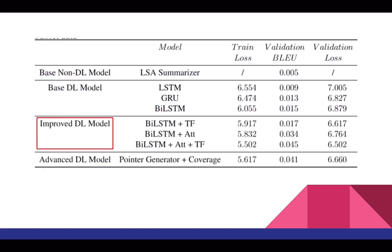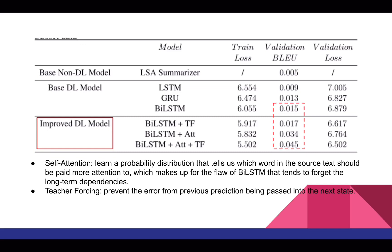In the improvement part, we can see that both teacher forcing and self-attention have managed to improve the model performance, and together they can dramatically boost the BLEU score to 0.045. We think this improvement should be credited to the advantage of self-attention and teacher forcing, which makes up for the flaw of the BiLSTM that tends to forget long-term dependencies and prevents the error from the previous prediction being passed into the next state, respectively.